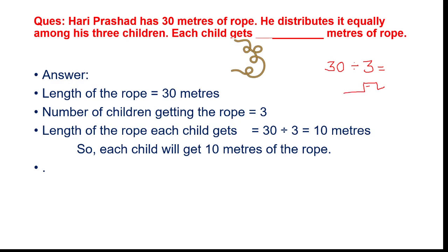For the division, the bigger number — the dividend, thirty — goes inside the box, and three, the divisor, goes on the outside. Three times one equals three, write three, subtract to get zero. Bring down the next zero; three times zero equals zero. So the answer is ten metres. Each child will get ten metres of rope.